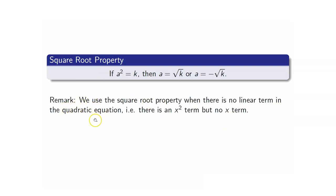Now, why is this square root property important? We use the square root property when there is no linear term in the quadratic equation. In other words, there is an x squared term, but there is no x term.